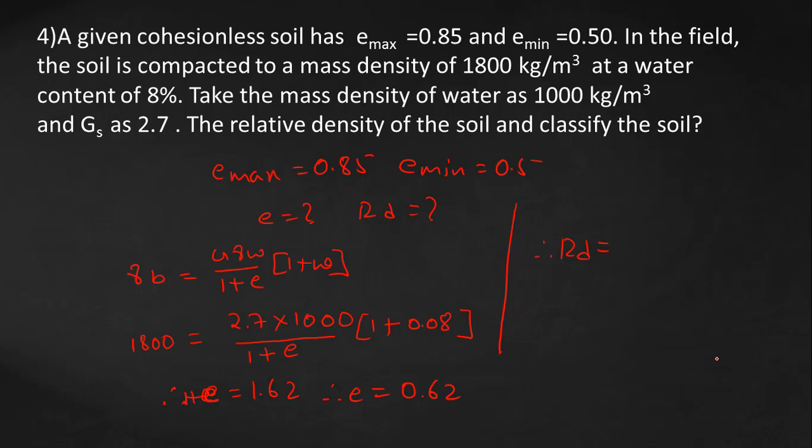Therefore, Rd equals emax minus e by emax minus emin. That equals 0.85 minus 0.62 by 0.85 minus 0.5, which equals 0.6571, or 65.71 percent.